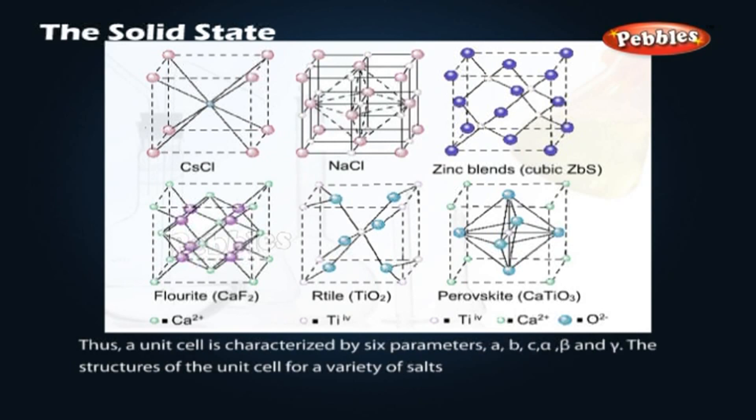Thus, a unit cell is characterized by six parameters: A, B, C, alpha, beta, and gamma. The structures of the unit cell for a variety of cells are shown.